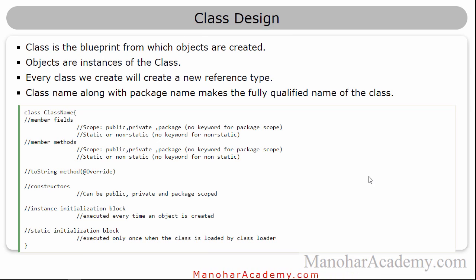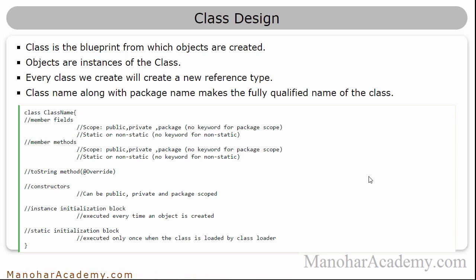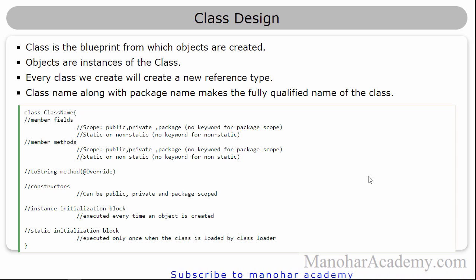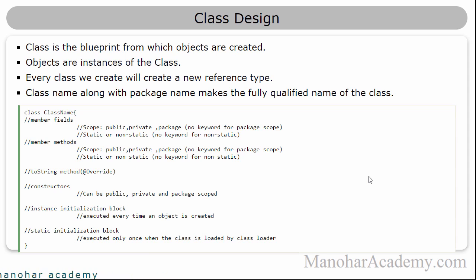The class design — we have designed some classes and looked at the LocalDate class in some detail. The class is the blueprint. We design the class so that we can create objects that have those fields, states, and behaviors. The class is always the blueprint and objects are nothing but instances of the class. Every time we create a class we are creating a new reference type, because in Java we have only two types: primitive or reference.